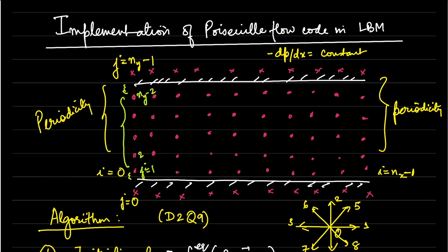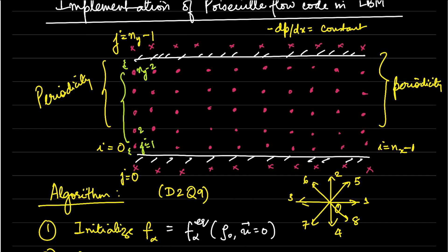The physical wall is actually located halfway between the fluid node and the solid node. This is the concept of the midlink bounce-back, also called the halfway bounce-back. Further, in this problem we will be using a D2Q9 discrete velocity set.